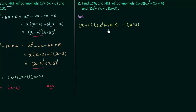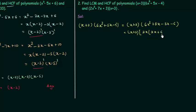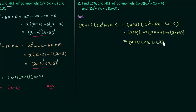For the first polynomial, we factorize 6x² + 5x - 4 by rewriting 5x as 8x - 3x, giving 6x² + 8x - 3x - 4. Taking 2x common from the first two terms gives 2x(3x + 4). Taking -1 common from the last two terms gives -(3x + 4). Since (3x + 4) is common, the factors of the first polynomial are (x + 3)(2x - 1)(3x + 4).